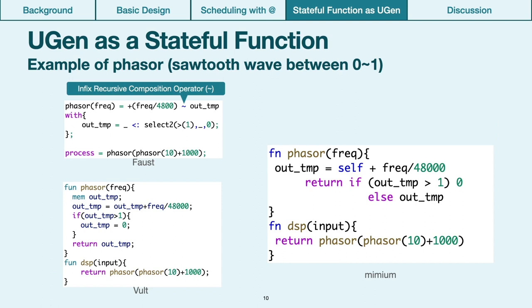For example, Faust realized the expression of signal processor without handling internal state variables by using several primitive stateful functions, such as delay and table lookup and recursive composition operator tilde. And Vult language by Ruiz also enabled unit generator expression as function, which does not require instantiation by introducing memory variable, which keeps state value over samples.